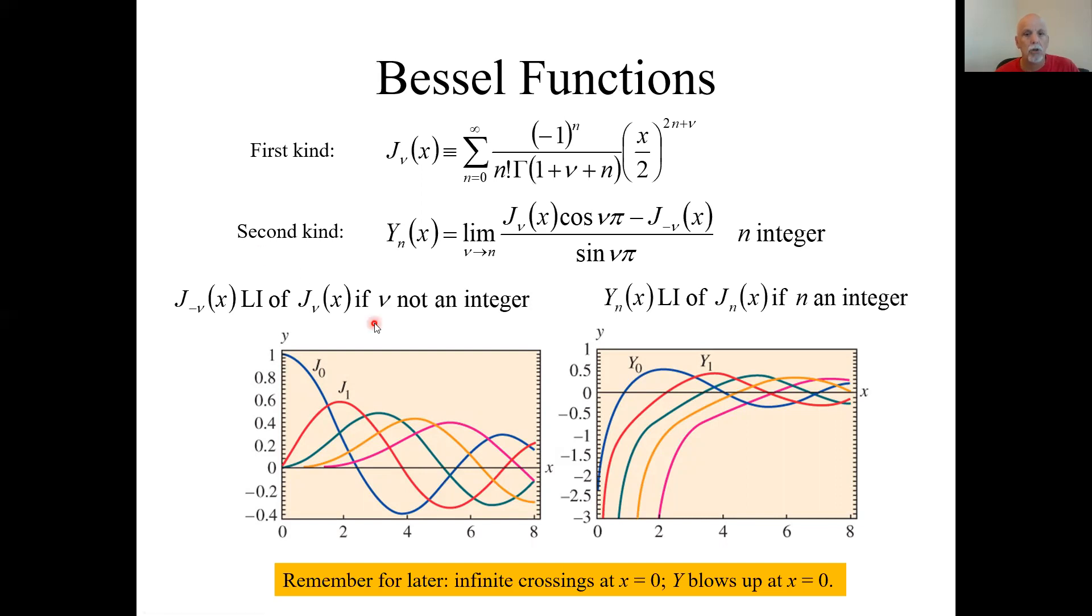But if nu is an integer, somebody smarter than me came up with this solution that is linearly independent of J sub nu. So this is the second particular solution, crazy looking thing. We're just going to call it Y sub n, because now the nu is an integer n. So this is a Bessel function of the second kind. We have all our particular solutions to the Bessel equation.